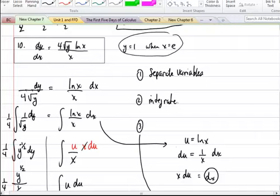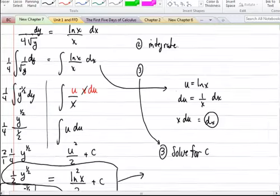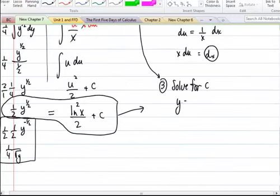In the original problem it said y is 1 when x is equal to e. So, I'm just going to write that down there, y equals 1 when x is equal to e. That's a convenient choice. So, now I'm going to plug in those values. I have 1 half y to the 1 half.